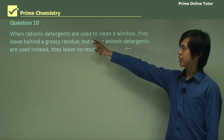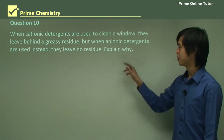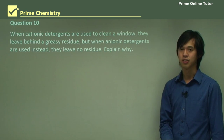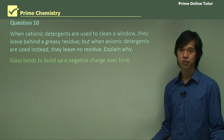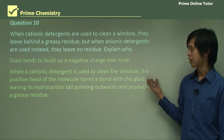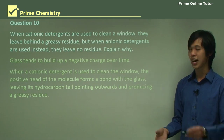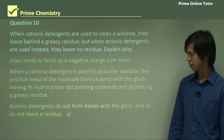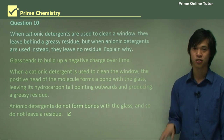When cationic detergents are used to clean a window, they leave behind a greasy residue, but when anionic detergents are used instead, they leave no residue — explain why. Glass tends to build up negative charge over time. When a cationic detergent is used to clean the window, the positive head of the molecule forms a bond with the glass, leaving the hydrocarbon tail pointing outwards, and that produces the greasy residue. Anionic detergents do not form bonds with the glass, and so don't leave that residue behind.